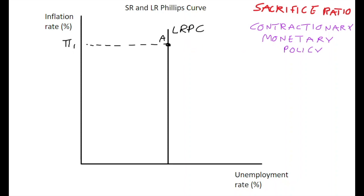What would happen is we would move down along a short-run Phillips Curve. I'll draw this in at point A, where we have a short-run Phillips Curve which is downward sloping, showing a trade-off between unemployment and inflation in the short run. Contractionary monetary policy will tend to increase the unemployment level in a country.